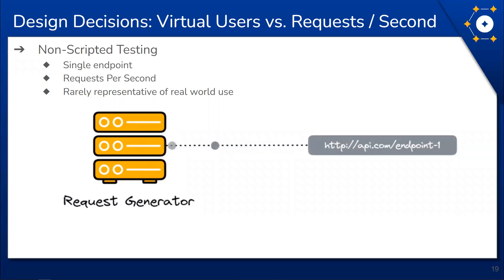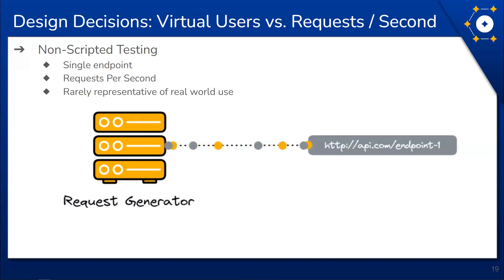The results of non-scripted testing are relatively straightforward — it shows how performance varies given a strictly defined load on an endpoint: what happens to the system with a thousand requests per second or a hundred thousand requests per second. While this can be useful for finding some performance issues, these tests don't typically simulate real-world use very well. Overloading one endpoint could affect the performance of another endpoint, such as it being a direct prerequisite to its use or consuming shared resources.